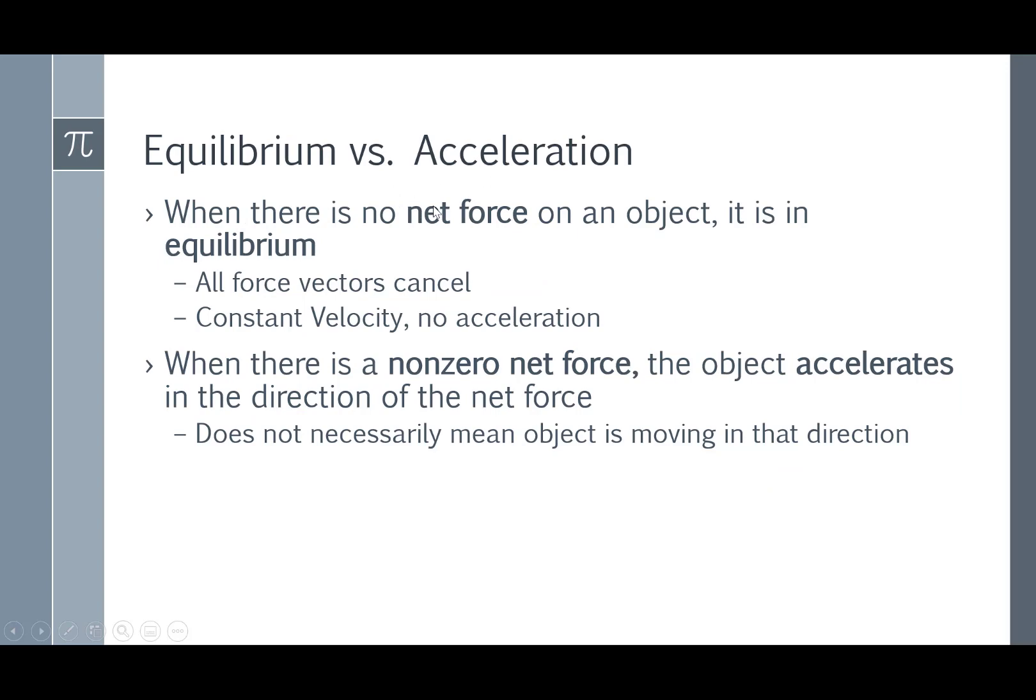When there is no net force acting on an object, we say it is in equilibrium. All the forces are balanced, they cancel out, which means we have constant velocity motion. Equilibrium is an important term. That means there's no acceleration. An object can be moving and be in equilibrium if it's going at a constant velocity, or it can be stationary in equilibrium if it's not moving.